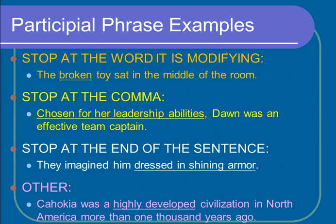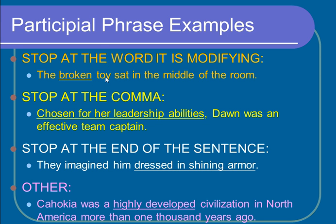For example: 'The broken toy sat in the middle of the room.' I first find the participle — broken. I find it because I would ask: what kind of toy, or which toy sat in the middle of the room? The broken toy. So, broken is my participle. In this case, I'm stopping at the word it's describing: toy. So the participle is 'broken' and the participial phrase is also 'broken' — the same answer for both.